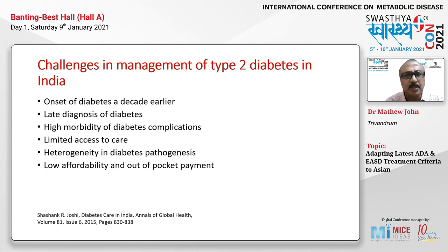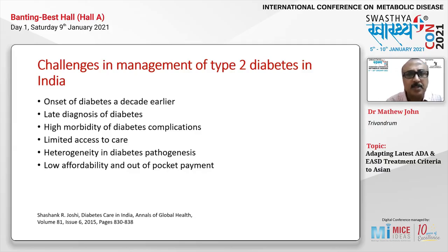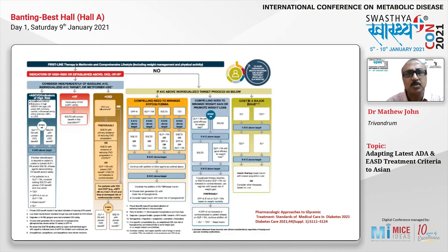There is limited access to care for patients with diabetes in India, predominantly due to financial reasons, the rural-urban divide in healthcare accessibility, and the cost of medicines. This leads to low affordability and out-of-pocket payments, in contrast to insurance-based payment systems in many Western countries. It is also important to recognize heterogeneity in the pathogenesis of type 2 diabetes in Indian or Asian patients, which may influence therapy choices for managing hyperglycemia.